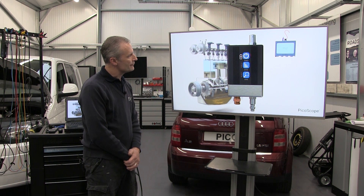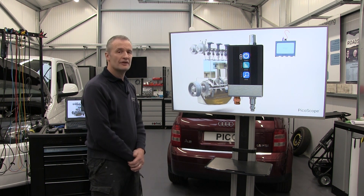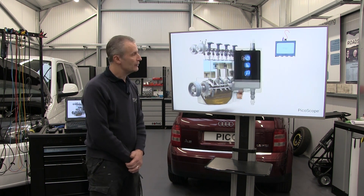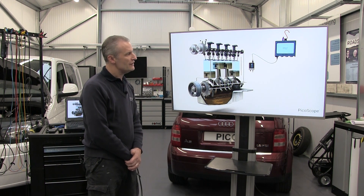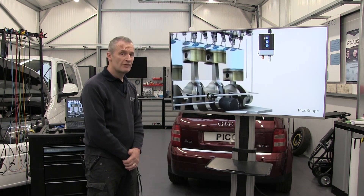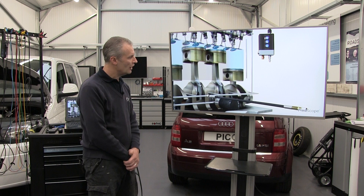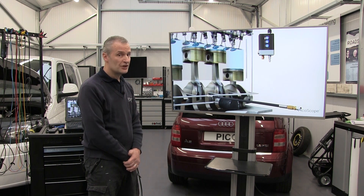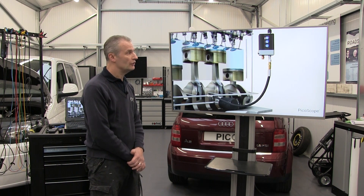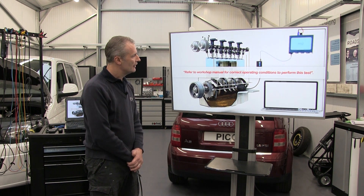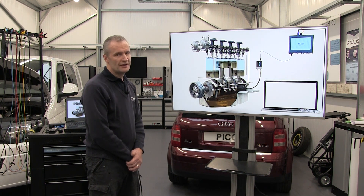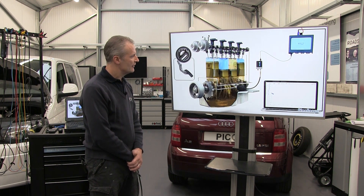We'll switch on the pressure transducer and make sure the test port is open to atmosphere — that's our calibration. For this test we're going to use range two, remove the oil pressure switch — that might be a transducer — or you can connect to the main oil gallery. Of course, follow manufacturer instructions for this test.